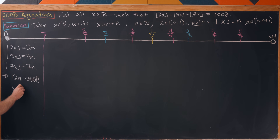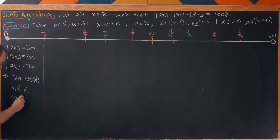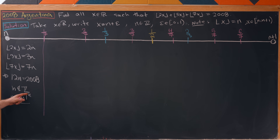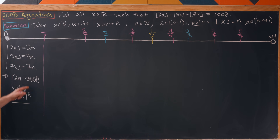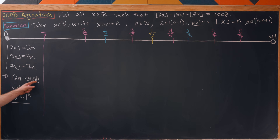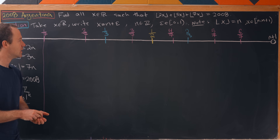Dividing by 12 shows n is not an integer, so there's no solution in this region. We can quickly see this because the left-hand side is a multiple of 3, whereas 2008 is not — the digit sum of 2008 is 2+0+0+8 = 10, which is not divisible by 3.